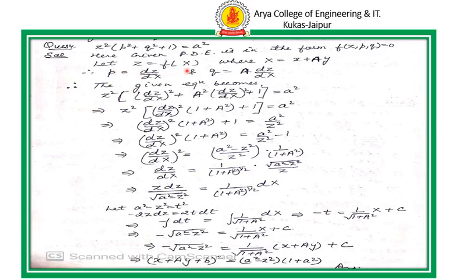Let us take some examples to understand standard form second. The given equation is in standard form second — it contains only the terms of Z, P, and Q. So Z equals a function of capital X, where capital X equals X plus AY. Substituting P equals dZ/dX and Q equals A·dZ/dX, after substituting P and Q in the given equation, we get a relation and find the value of dZ/dX. Taking the square root, we have dZ/dX. We separate the terms of Z on the left-hand side and the terms of X on the right-hand side, and on integration, substituting capital X equals X plus AY, we get the required solution.